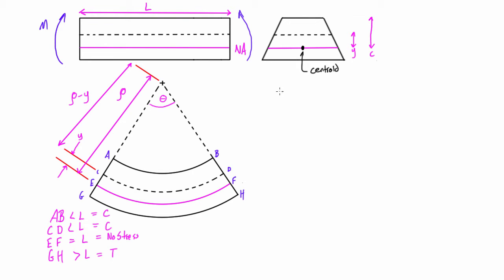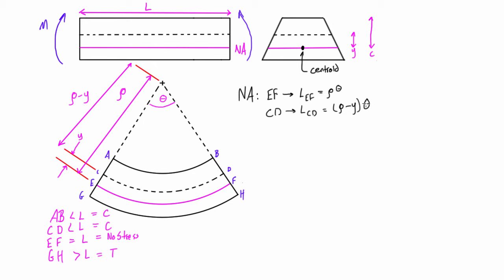When we look at the neutral axis, this is line EF passing through the centroid of the cross section. We figured that the length of EF is an arc length equal to ρ times θ. When we look at any other plane of interest, arbitrarily called CD, we want to find L_CD. CD is a distance y away from the neutral axis, so the radius to the center of curvature is ρ minus y, and the arc length is (ρ − y)θ.